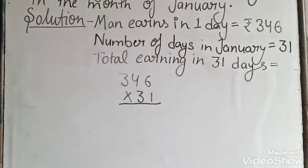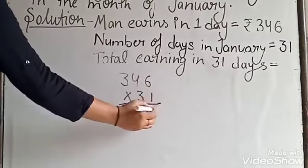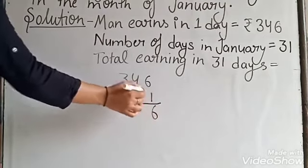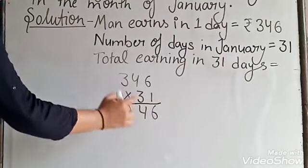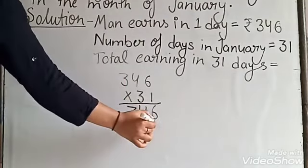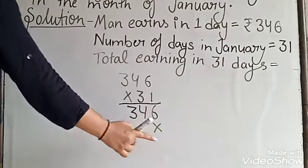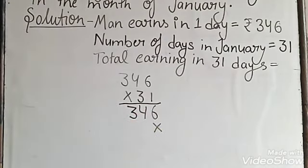Start multiplication with 1. Place the 3, put the cross. That means one space digit should be multiplied before, and now we multiply the tens place digit, 3.